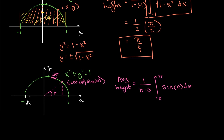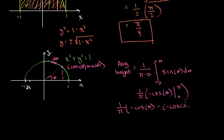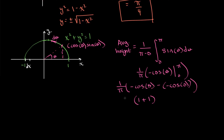All we do now is compute this. This is going to be 1 over π times the antiderivative of sine of theta, which is negative cosine of theta. We evaluate this at 0 and π. So we get 1 over π times negative cosine of π minus negative cosine of 0. Cosine of π is negative 1, so negative cosine of π is 1. Cosine of 0 is 1, so negative cosine of 0 is negative 1, giving minus negative 1. That's 1 plus 1 equals 2, times 1 over π, which comes out to 2 over π.